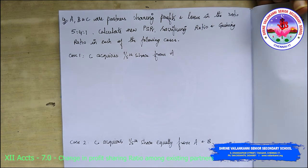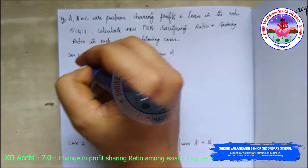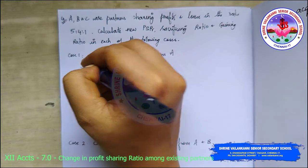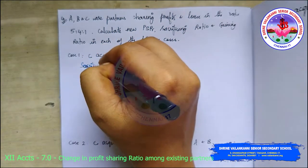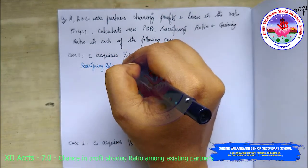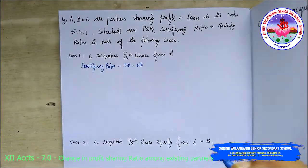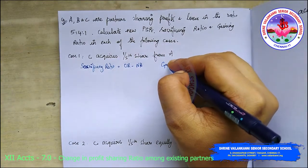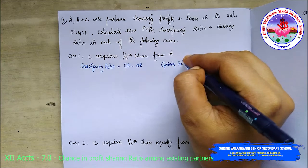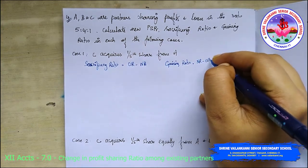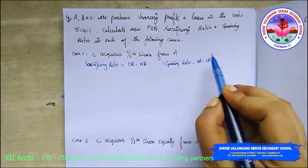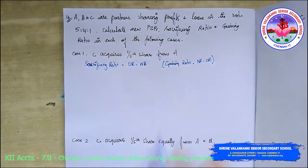Case 1: C acquires 1/5 share from A. Sacrificing ratio is old ratio minus new ratio. Gaining ratio is new ratio minus old ratio. When the sacrificing ratio is a negative figure, it is called a gaining ratio.